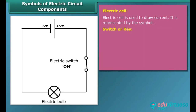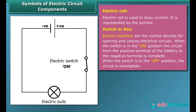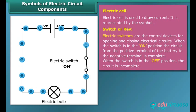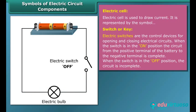A switch or key makes or breaks the connection in a circuit. When the switch is in the on position, the circuit is closed and the current flows throughout the circuit. When the switch is in the off position, the circuit is open. In this case, no current flows through the circuit.